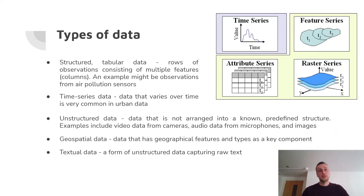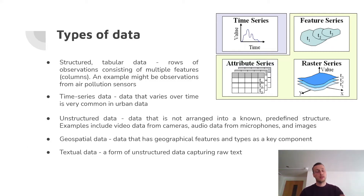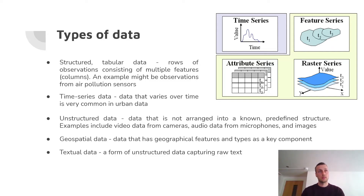Different types of data. We have structured data — probably the most familiar type — composed of rows and columns, where rows are observations at a particular point in time and columns are whatever you're measuring, such as air pollution or temperature. We also have time series data: data that varies over time, which is very common in urban datasets, where you're often measuring how things change over time. There are techniques specifically for time series analysis.